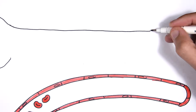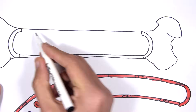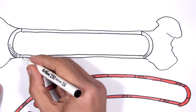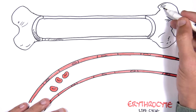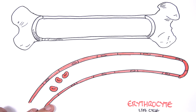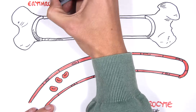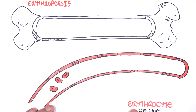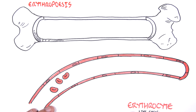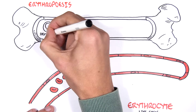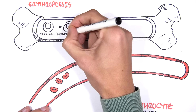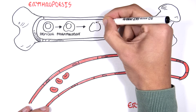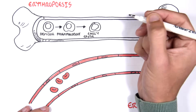But where do the red blood cells come from? Well, they all arise from the bone marrow. Here I'm drawing a bone. The red blood cells come from stem cells within the bone marrow. Erythropoiesis is the term used to describe erythrocyte synthesis, or the production of red blood cells. Hemopoietic stem cells can differentiate into pro-erythroblast and then early erythroblast.